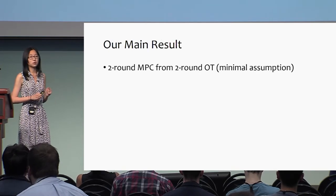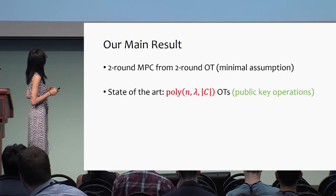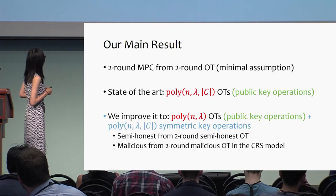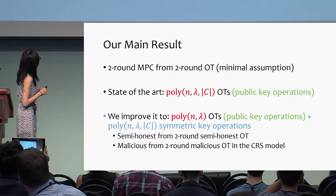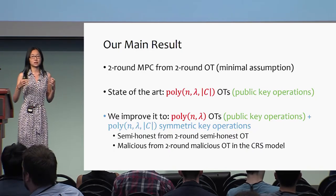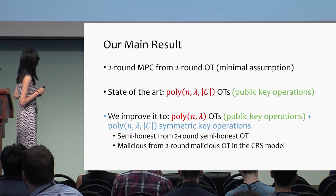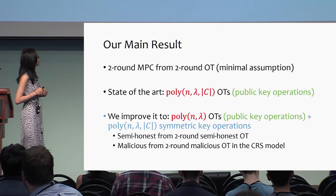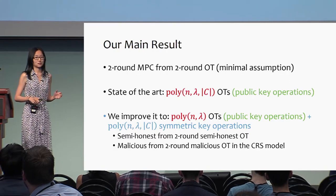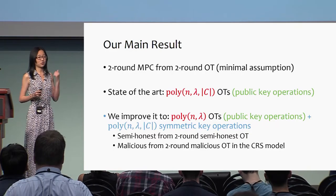Here is our main result. We constructed two-round MPC from two-round OT, which is a minimal assumption. The state of the art uses a number of OTs that is polynomial in N (the number of parties), lambda (the security parameter), and C (the size of the circuit — the number of gates). We improve this to be independent of the size of the circuit. We also achieve semi-honest two-round MPC from two-round semi-honest OT, and malicious MPC from two-round malicious OT in the CRS model.